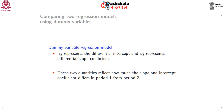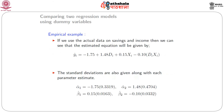In the above model, α₂ represents the differential intercept and β₂ is the differential slope coefficient between the two models. The inclusion of the dummy variable changes the slope parameter by β₂ and the intercept parameter by α₂ from one period to another. This indicates by how much the slope and intercept coefficients differ from period 1 to period 2.